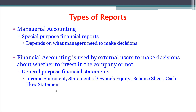Financial accounting uses general purpose financial statements — the income statement, statement of owner's equity, balance sheet, and cash flow statement. These four statements are prescribed by GAAP (Generally Accepted Accounting Principles), making them similar enough across companies for comparison. Managerial accounting reports, by contrast, can be completely different from one company to the next, with many being entirely custom to that organization.